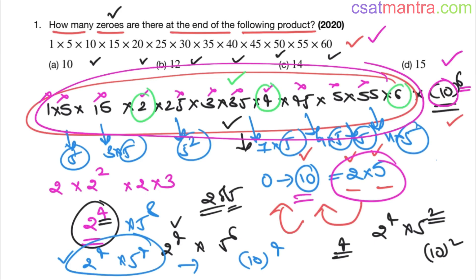Here there are fewer 2s than 5s — we have 2 here, 2² here, 2×3 here. Since there are fewer 2s, that will determine the number of tens. We have 4 twos, so we cannot have more than 4 tens or 4 zeros from the hidden part. If you are an advanced student, just by looking you can confirm there are more 5s than 2s.